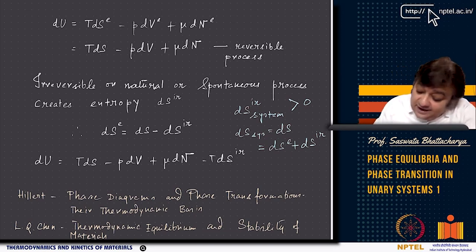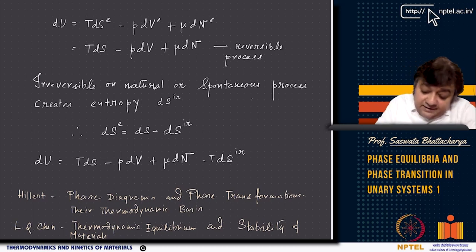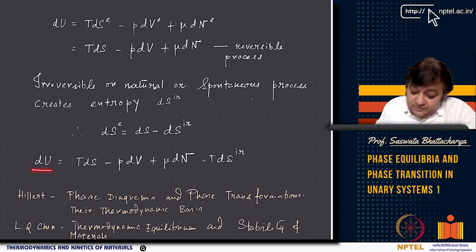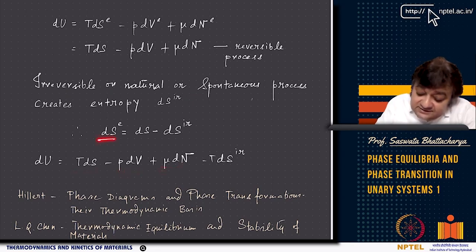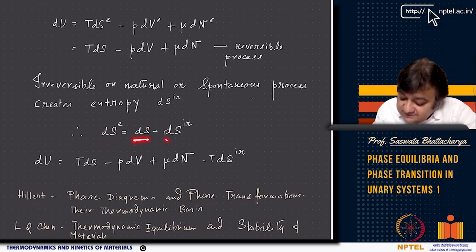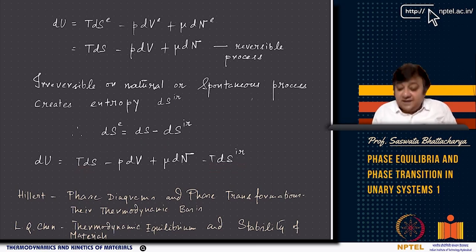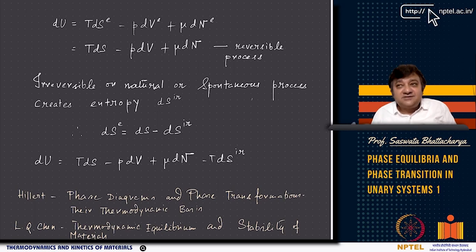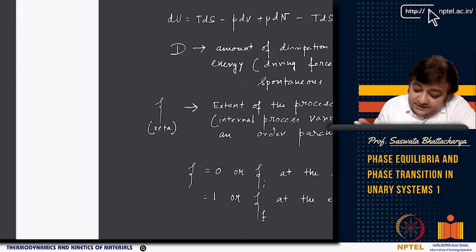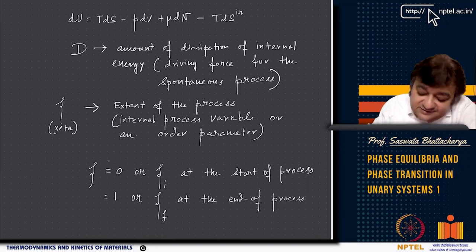We can write DU for an irreversible process happening inside the system as T·DS − P·DV + μ·DN, where DS_exchange = DS − DS_IR. This DS_IR has been used by Hillert in his phase transformation book and by Long King Chen in his book on thermodynamic stability of materials, to quantitatively calculate the contribution of entropy produced when there is an irreversible process.